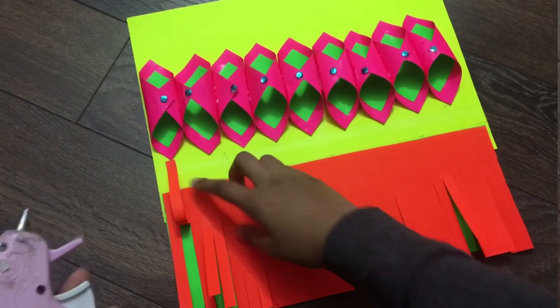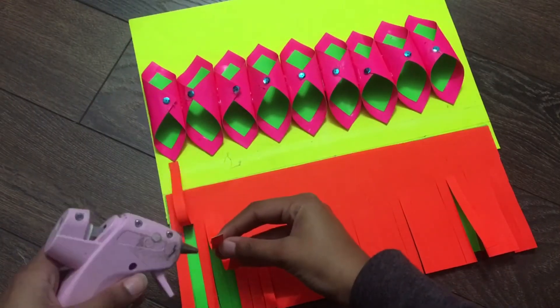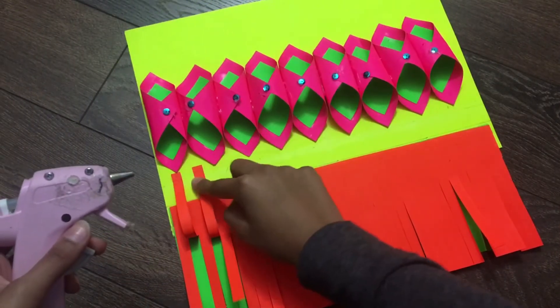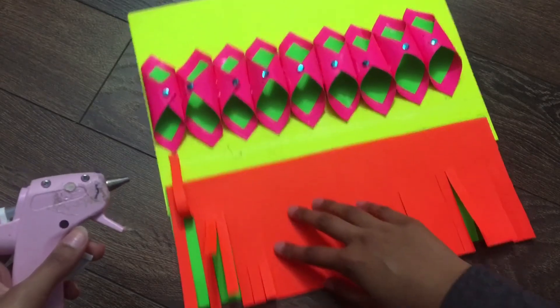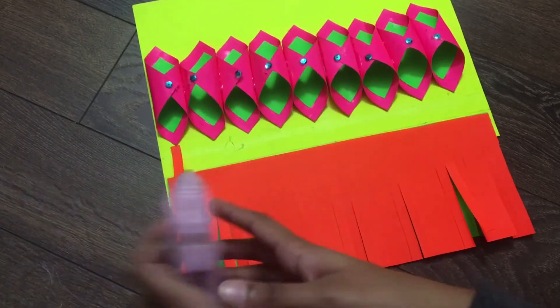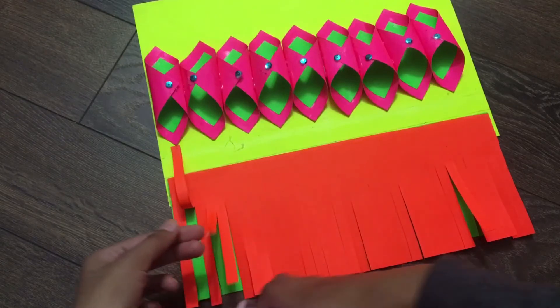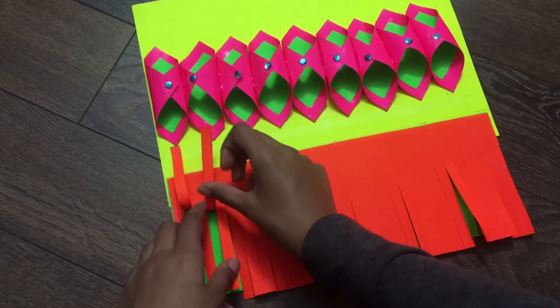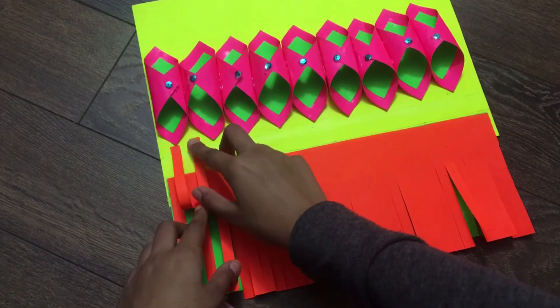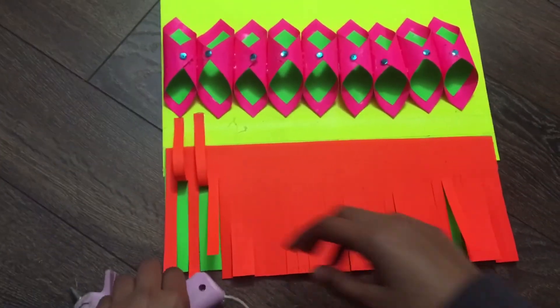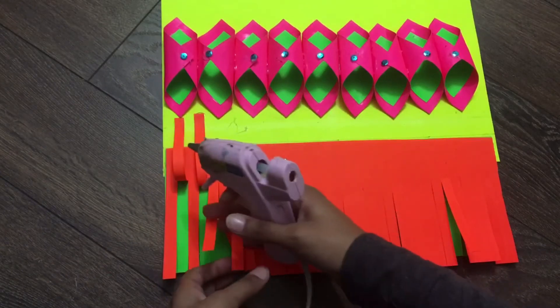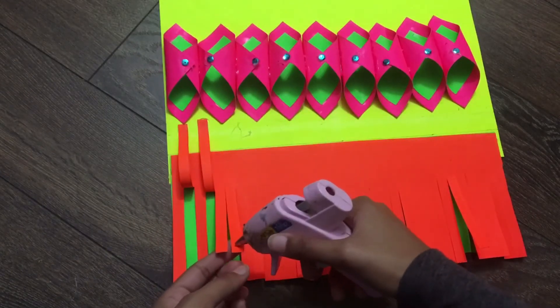So now what I'm doing is taking a strip of paper and just gluing it onto the yellow part. Just take a dab of glue and glue it onto the yellow part and it should make a little curve. Do this to every other strip so there should be one orange strip and one green strip.